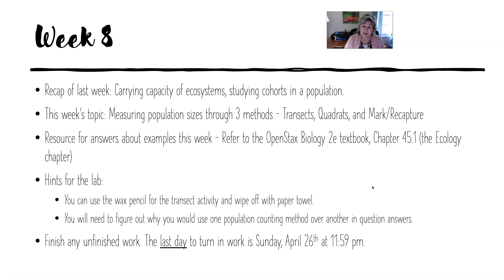Quadrats are small squares that you measure out and then count how many individuals are in that particular square. We also have mark and recapture, where we mark some individuals of a population, release them back, and when we catch them again along with unmarked individuals, we can figure out how big the population is just by knowing how many marked individuals you had captured before. That's pretty cool.